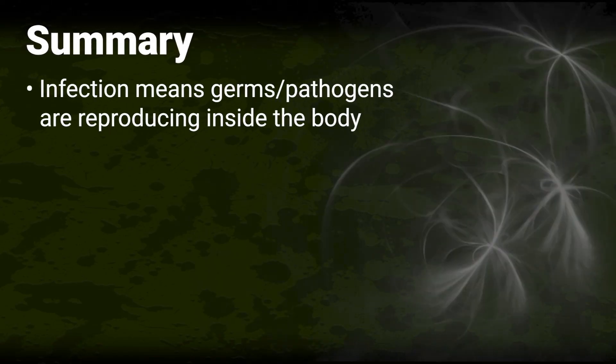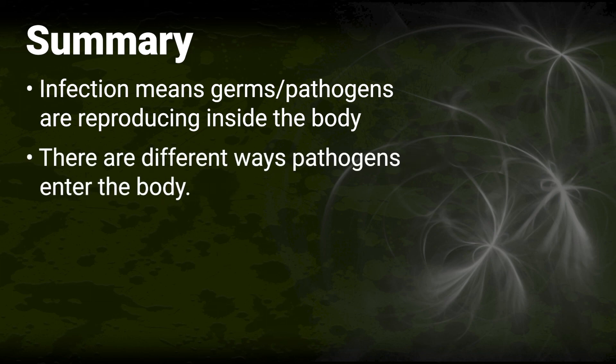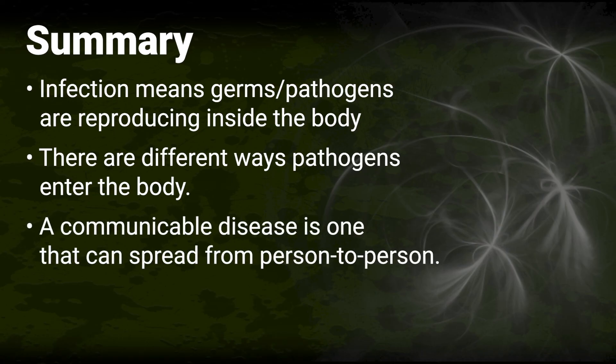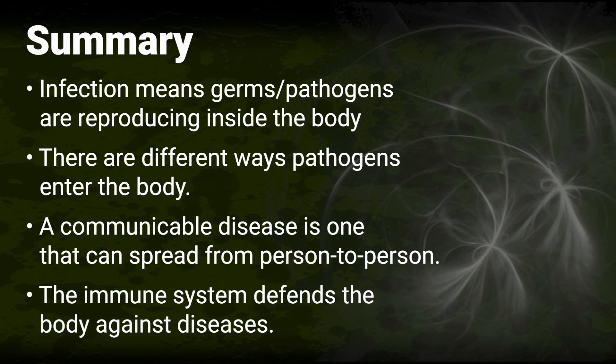Summary. Infection means germs, also known as pathogens, are reproducing inside the body. There are many different ways pathogens can enter the body. Communicable diseases are infections that can spread from person to person. The immune system defends the body against diseases.